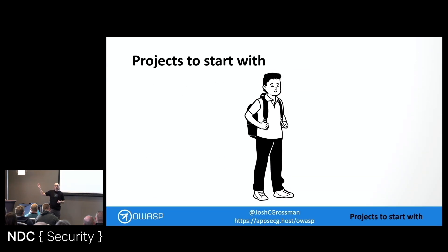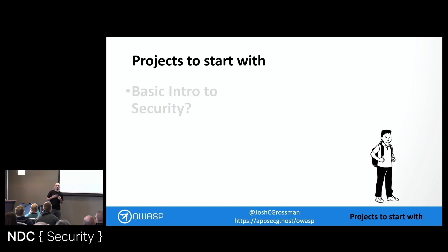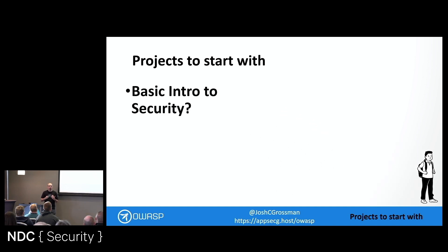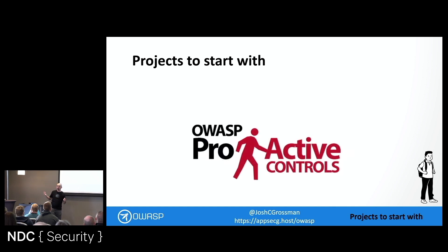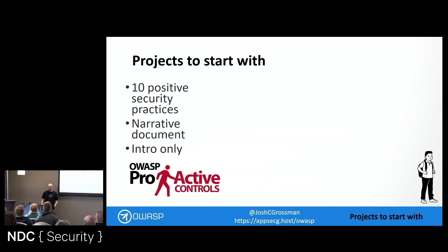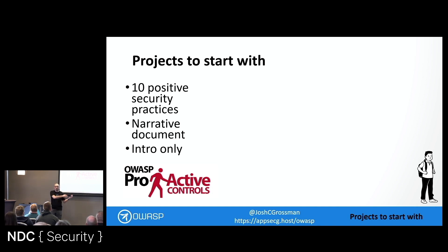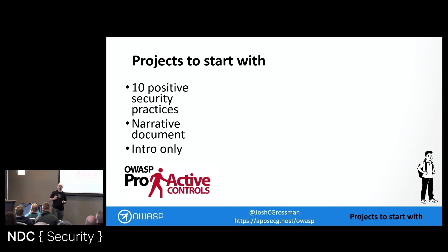If you or your developers are quite early stage in your security journey and you're not sure what you need to know or what you should be thinking about, I'd like to talk about the OWASP Proactive Controls. These are 10 positive practices — not the regular OWASP Top 10 which lists 10 problems, but 10 solutions: 10 ways you can build security into your application, 10 things to think about while you're building it. It's not comprehensive — we'll get to comprehensive later — but it's a nice document to read through and get an idea of important security topics. You can read it yourself or give it to your developers; it's not too long.